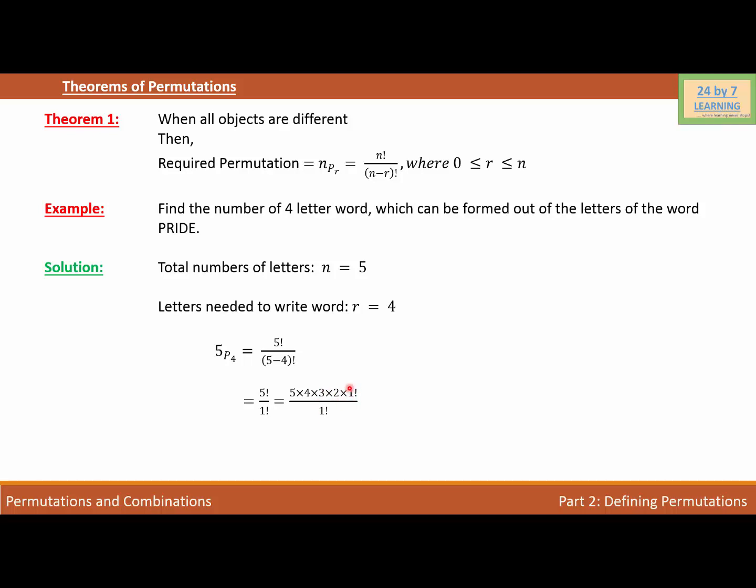And as you can see, we can cancel out factorial 1. And if we do that, we have 5 times 4 times 3 times 2.